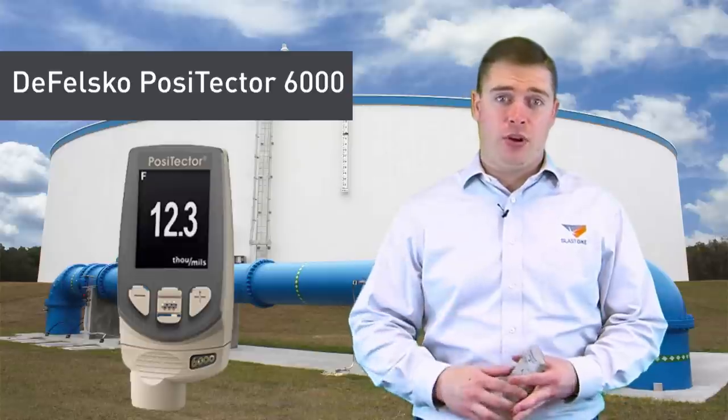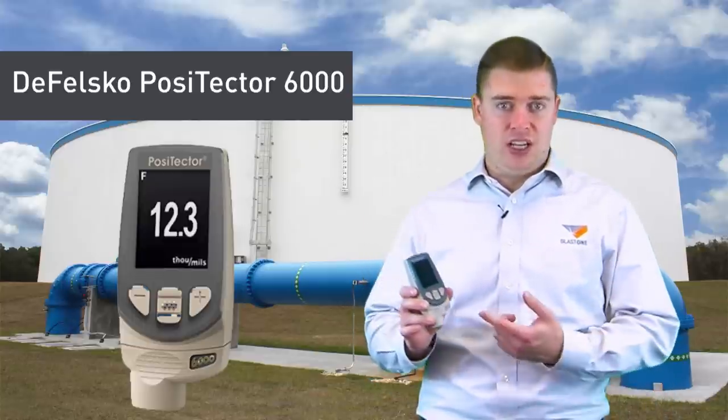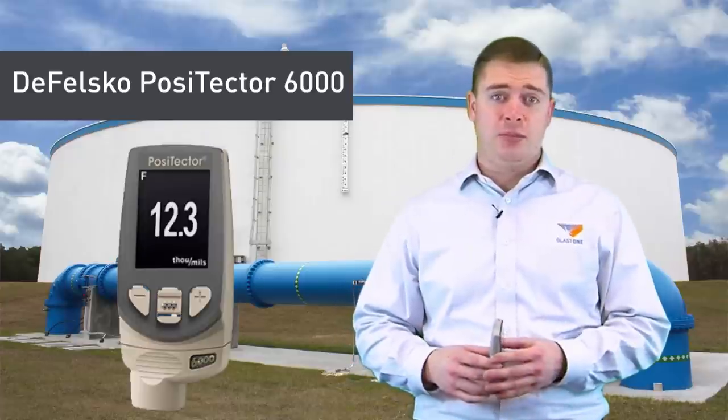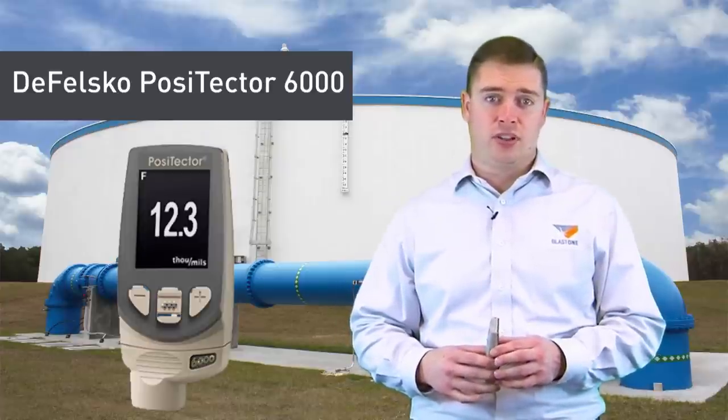We're going to use the DeFelsko PosiTector 6000 DFT gauge. This gauge has a PA2 setting that will help us to easily batch all these readings and calculate all the averages for us.